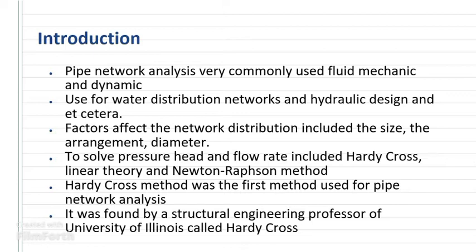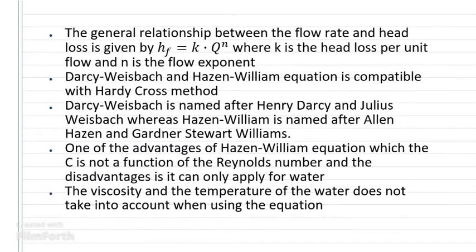Hardy-Cross method was the first method used for Pipe Network Analysis. It was founded by a structural engineering professor at University of Illinois called Hardy-Cross. The general relationship between the flow rate and the head loss is given by hf equals k multiplied by Q to the power of n, where k is the head loss per unit flow and n is the flow exponent.